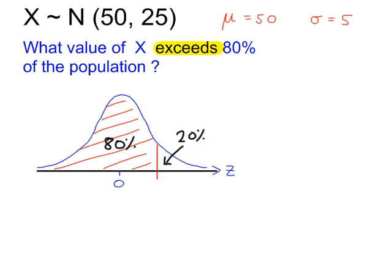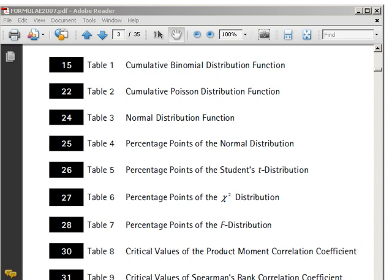Go to the tables, and you have a choice, either table 3 or table 4. Because you're starting off with a probability, it's table 4 that you need to go to, page 25.